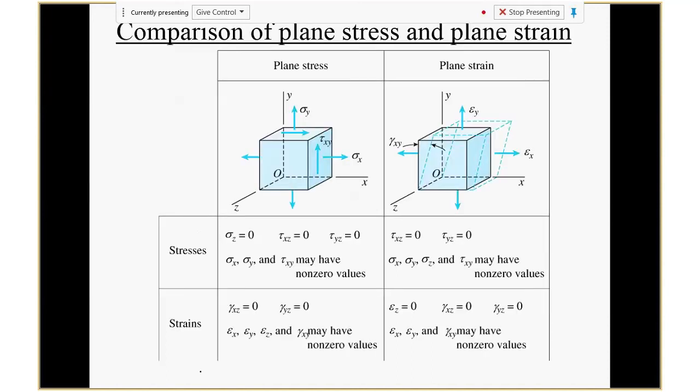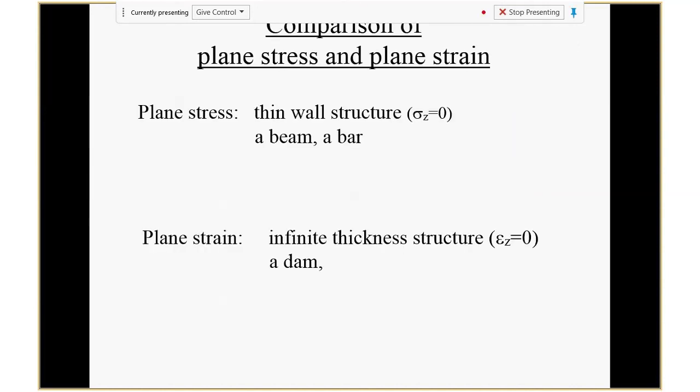Here's a clear comparison between plane stress and plane strain. Plane stress: σz = 0. Plane strain: εz = 0. That's the main characterization. There's a more detailed comparison table in the textbook. Easy to memorize: plane stress — no stress in the third direction; plane strain — no strain in the third direction.